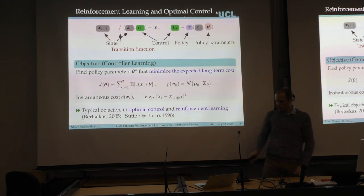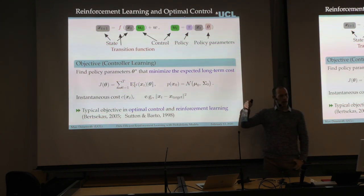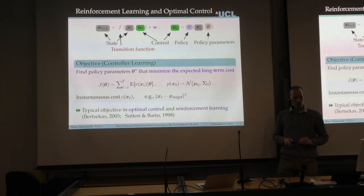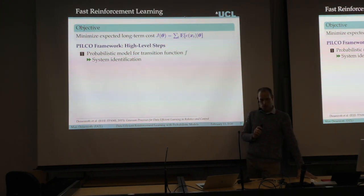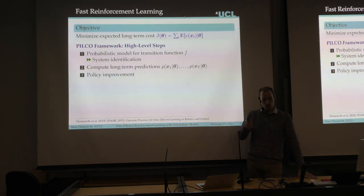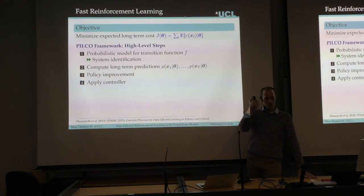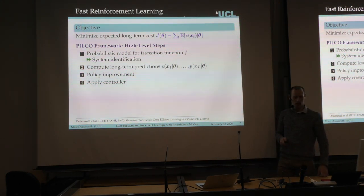I'm going to introduce a conceptually simple algorithm consisting of four steps that solves this reinforcement learning problem in a data-efficient way. Step one: learn a probabilistic model for the transition function. Step two: use this model to predict the long-term state evolution given a particular controller parameterization. Step three: improve the policy — change the policy parameters. Step four: apply the controller to the system. Conceptually simple: model learning, prediction, controller optimization, apply. But I want to go through each step in some detail to highlight the challenges happening under the hood.